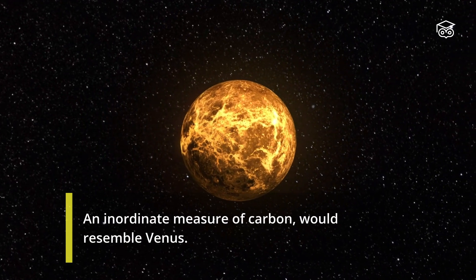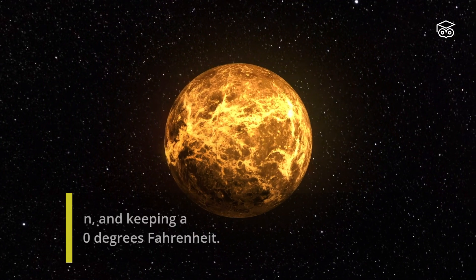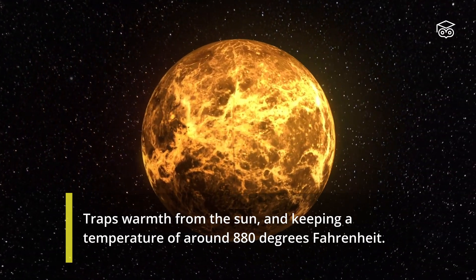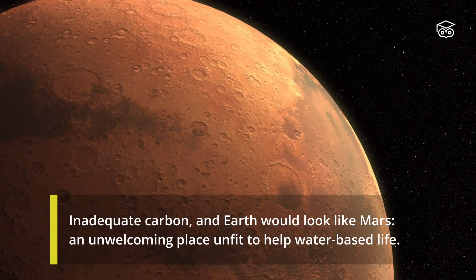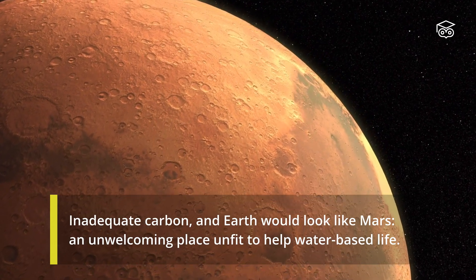An excessive measure of carbon would resemble Venus, trapping warmth from the sun and keeping a temperature of around 880 degrees Fahrenheit. Inadequate carbon, and Earth would look like Mars, an unwelcoming place unfit to support water-based life.